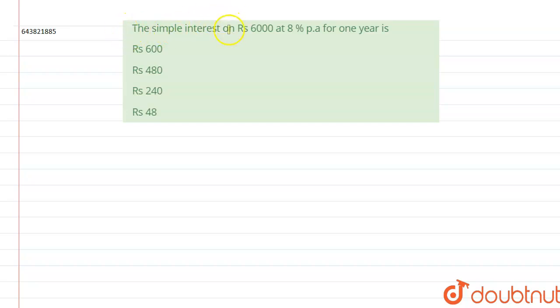The simple interest on Rs. 6000 at 8% per annum for 1 year is: Option A, Rs. 600, Option B, Rs. 480, Option C, Rs. 240, and Option D, Rs. 48.